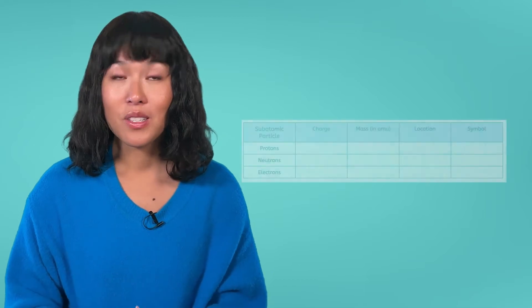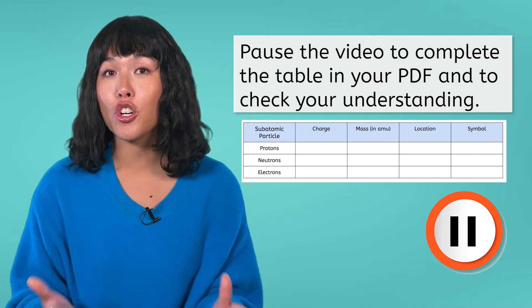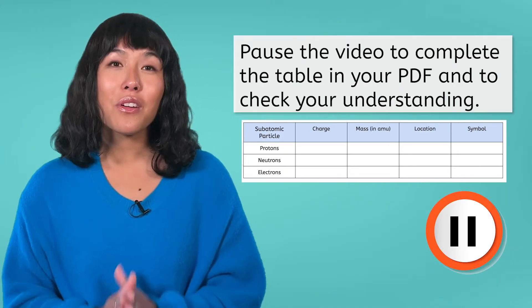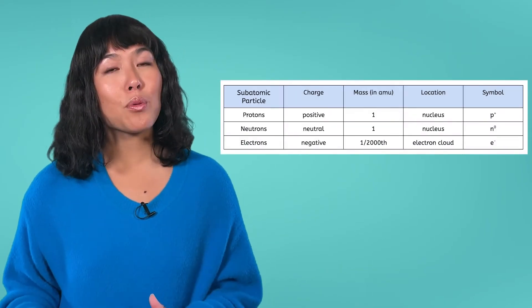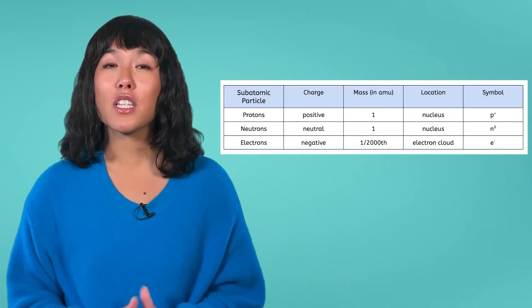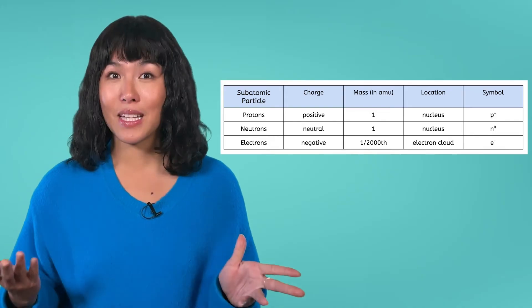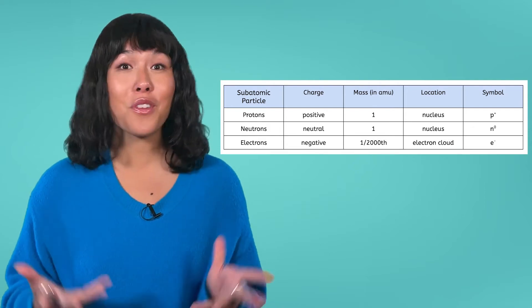That was a lot of information. It might be helpful to look at it in one clear table, so let's make one. Pause the video and try to complete the table in your PDF on your own first. When you're finished, hit play and let's check your work together. Welcome back! Compare your table to the table on the screen. If you had some trouble, don't worry, because we will review it in the lesson PDF. You can always go back and re-watch the video if you want.